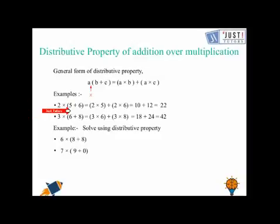Here are two examples for you: 2 times by (5 add 6) where 5 and 6 are in brackets. We can solve this question either by solving the brackets at once, or we can use the distributive property to work out the answer.